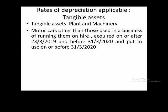Next is tangible assets — plant and machinery. The first one is motor cars, other than those used in a business of running them on hire. Motor cars acquired on or after 23rd August 2019 but before 31st March 2020 — these are not taxis, but motor cars used especially for the business.